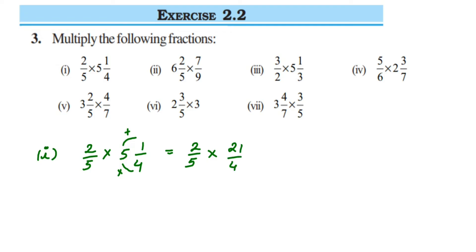Now try to cancel numbers if possible. We can cancel 2 and 4. Remember: when you're cancelling, you have to cancel a number in the numerator with one in the denominator - you cannot cancel numbers both present in the numerator or both in the denominator. So 2 and 4 get cancelled: 2 ones are 2, and 2 twos are 4.